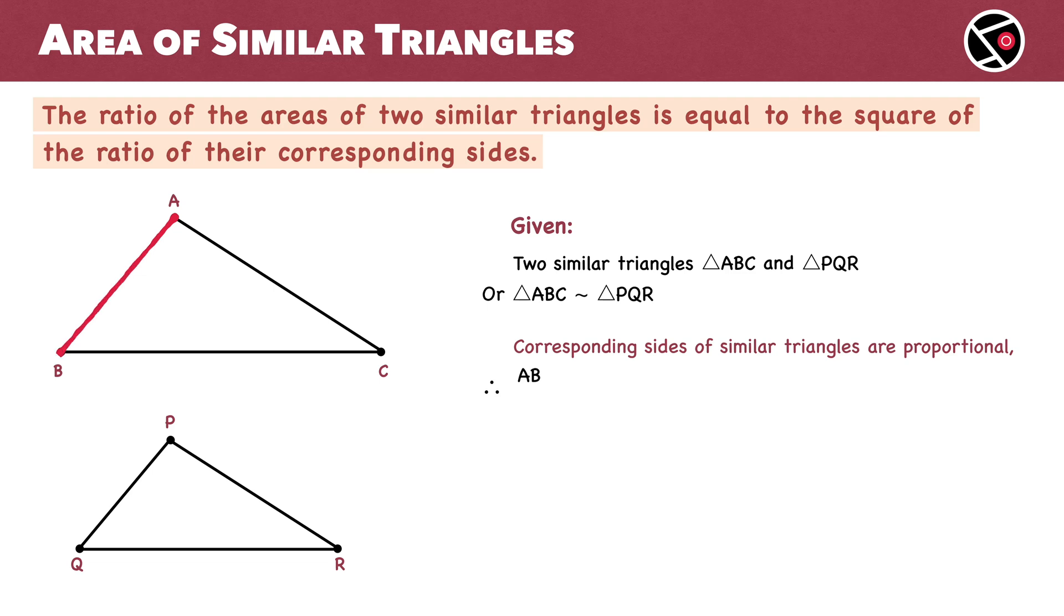So, AB by PQ equals BC by QR equals CA by RP. Let this ratio be K, a constant. This is our equation number 1.